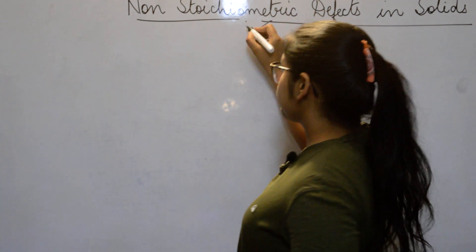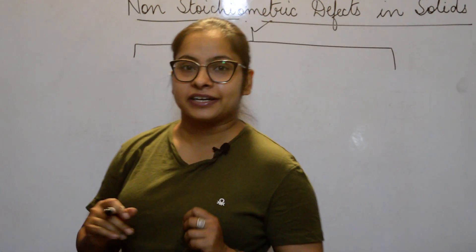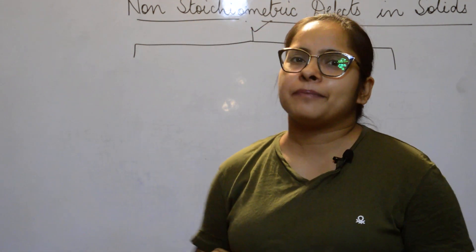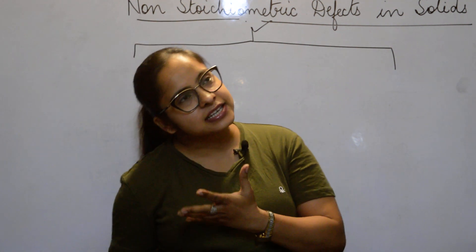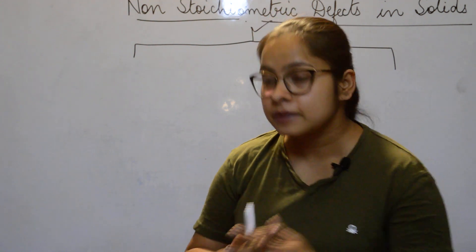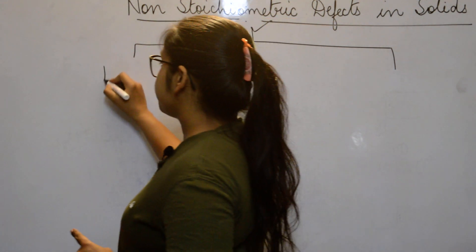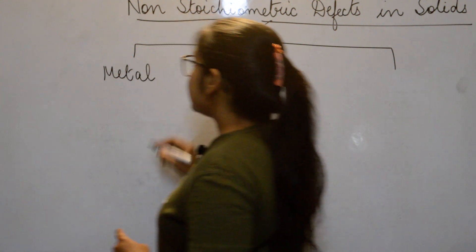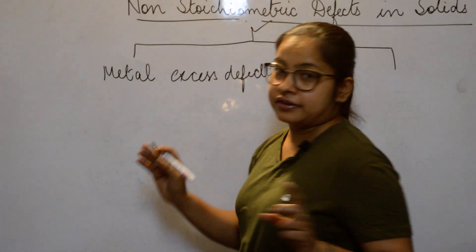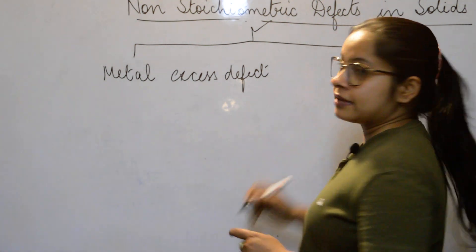Coming to non-stoichiometric defects, if we classify them, broadly they are divided into two types. When a defect comes, either there will be excess or deficiency of metal in your crystal, and this will cause a change in stoichiometry. The first type is metal excess defect — metal is more.